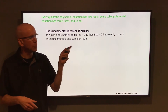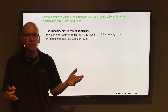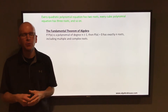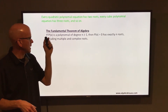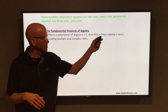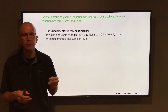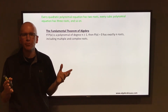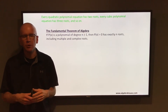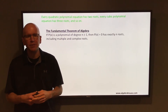Every quadratic polynomial equation has two roots — the degree is 2, you're going to get two roots. They may be complex, they may have multiplicity 2, or they may be two real solutions. Every cubic polynomial equation has three roots. The fundamental theorem of algebra states that if p(x) is a polynomial where the degree n is greater than or equal to 1, then p(x) = 0 has exactly n roots — including multiple and complex roots.